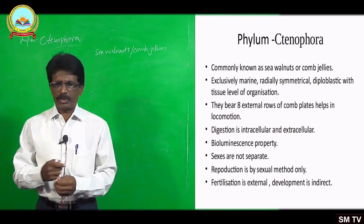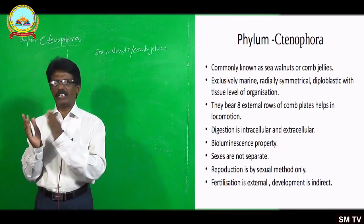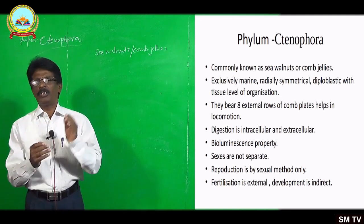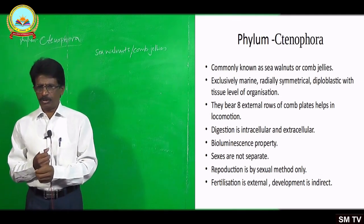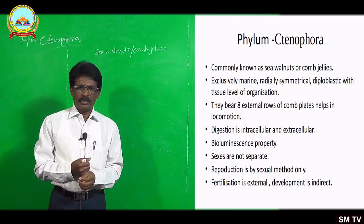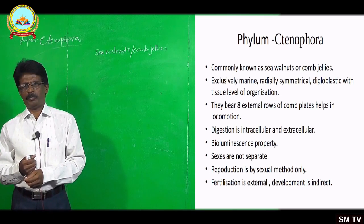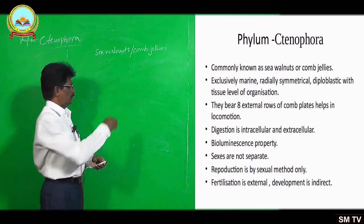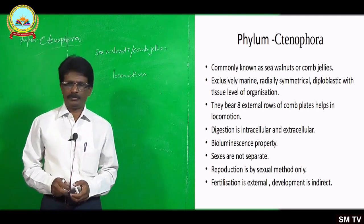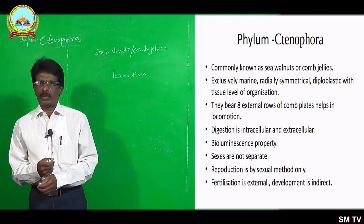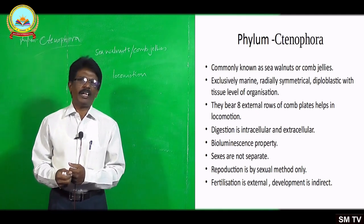They are radially symmetrical, like in case of the cnidarians — diploblastic with tissue level of organization. So the body organization in ctenophorans is similar to that of the cnidarians. One of the important characters of ctenophorans is that they bear eight external rows of ciliary comb plates, which are meant for locomotion. As in cnidarians, the digestion in ctenophorans is both intracellular and extracellular.